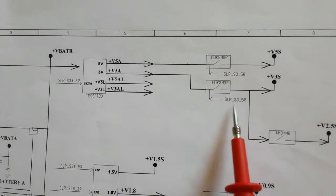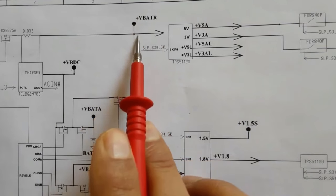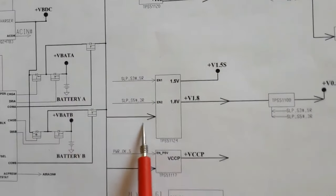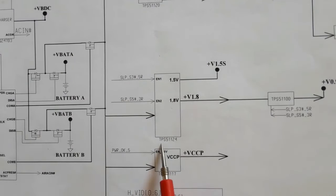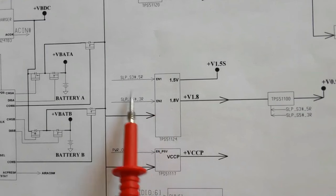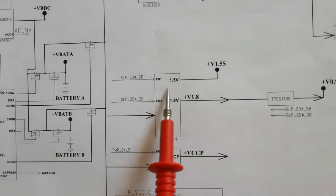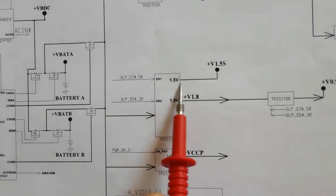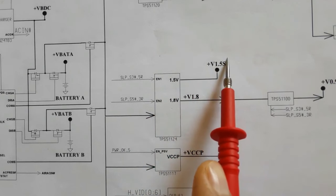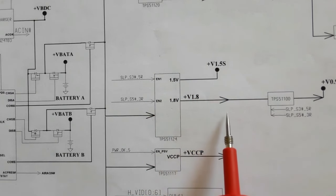VBAT is also applied to the TPS51124 circuit. With two enable signals, this IC generates 1.5 volt and 1.8 volt.